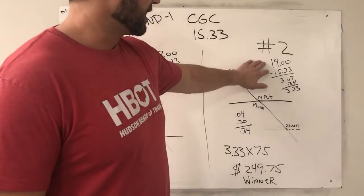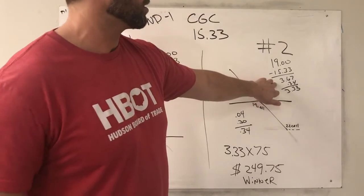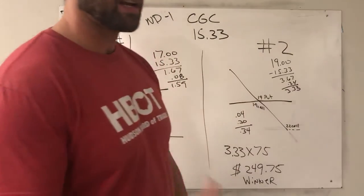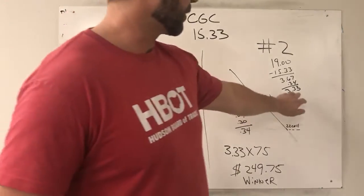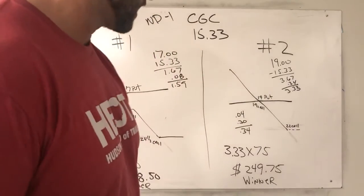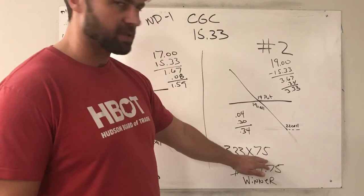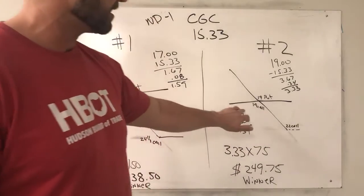So 19 less the settle of 15.33 gets us to $3.67. We take out the 34 cents that it cost us and we end up with a profit of $3.33. Now we did this trade 75 times because this was more risky, because we sold the 19 call which was at the money at the time.